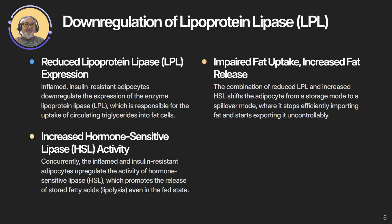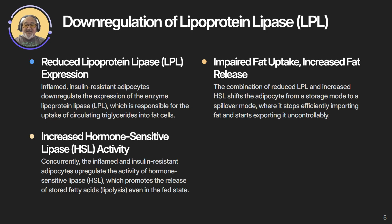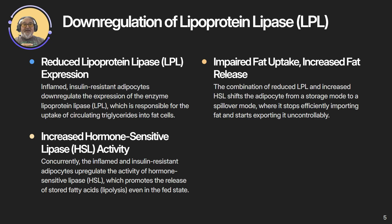Downregulation of lipoprotein lipase — LPL. Fat storage requires the enzyme lipoprotein lipase, LPL, which is upregulated by insulin. But inflamed, insulin-resistant adipocytes downregulate LPL, reducing their ability to uptake circulating triglycerides. Simultaneously, they upregulate hormone-sensitive lipase — HSL — increasing fat release, or lipolysis, even in the fed state. So the adipocyte shifts from storage mode to spillover mode. Think of it like a fuel tank that has too much fuel in it — it's trying to get rid of excess so it can do its job. It stops importing fat and starts exporting it uncontrollably.